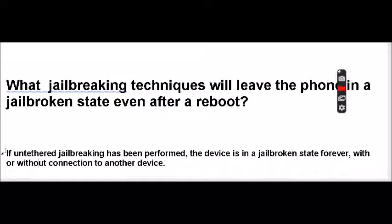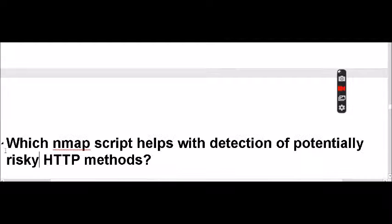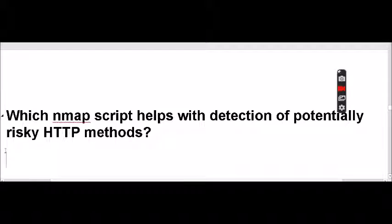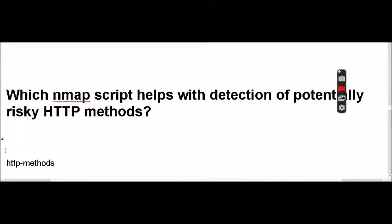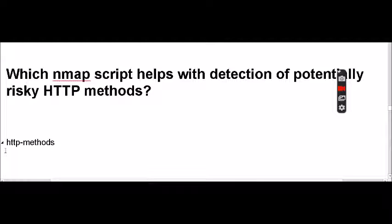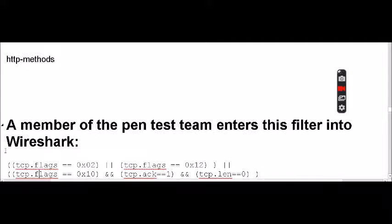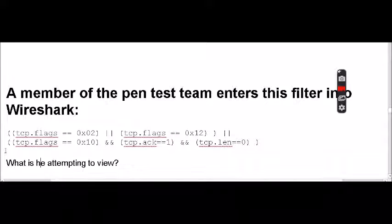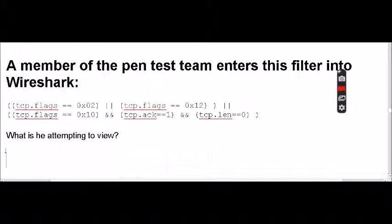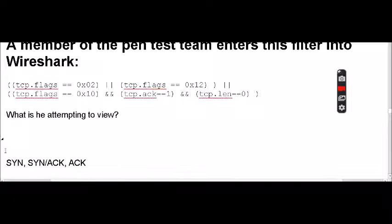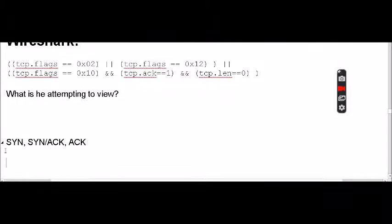Which Nmap script helps detect potentially risky HTTP methods? The script is called http-methods. A member of the pen test team enters a filter into Wireshark. What are they trying to view? In this case, they're trying to view SYN, SYN-ACK, and ACK packets.